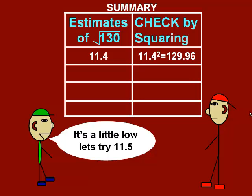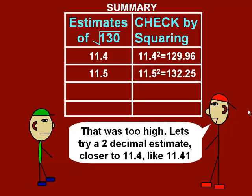So let's do what Haas suggests and try 11.5. So now 11.5 squared is greater than 130. Now we want to choose another number. It's going to be in between 11.4 and 11.5 because 130 is in between 129.96 and 132.25.